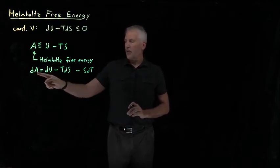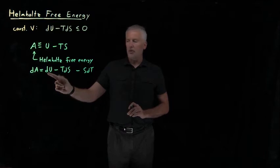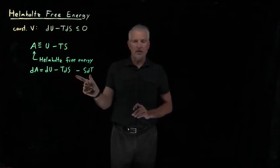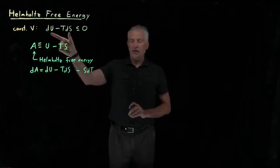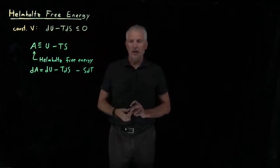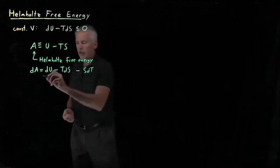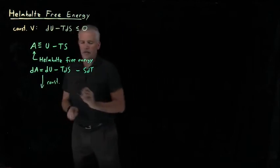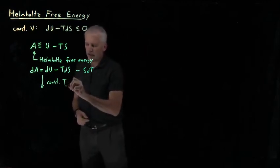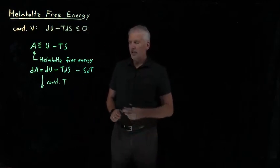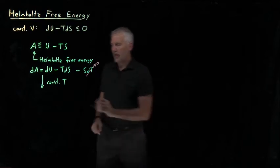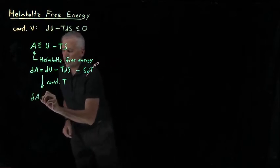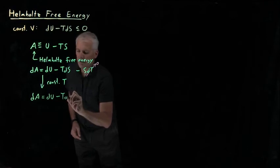So here's what I meant. This quantity, dA, is not exactly equal to dU minus TdS, the quantity we're interested in. It has this extra term, SdT. In order to make this quantity look exactly like the property that predicts whether a process is spontaneous or not at constant volume, we have to do one more thing. To get rid of this last term, let's also do this at constant temperature. If I do a process at constant temperature, then dT will be zero, so then dA equals dU minus TdS, and the last term has gone away.